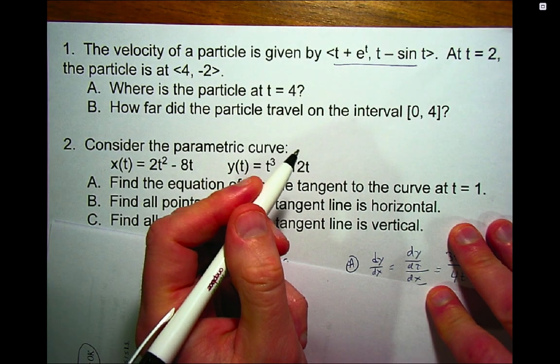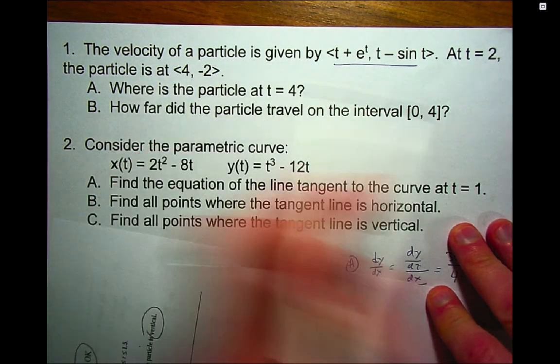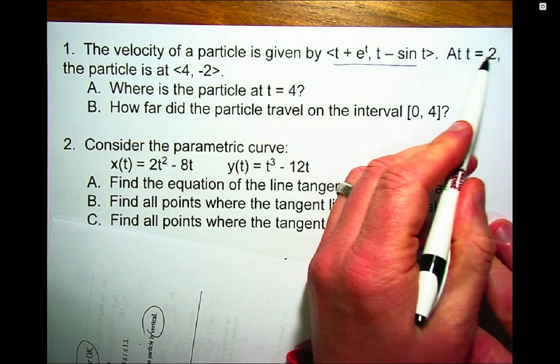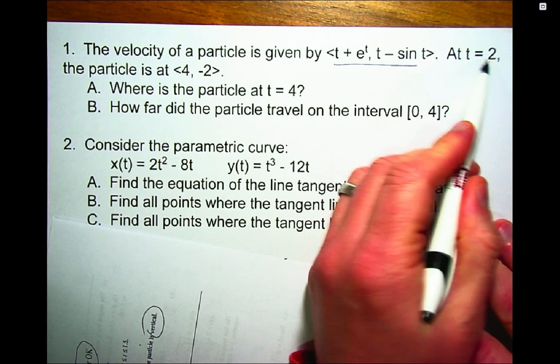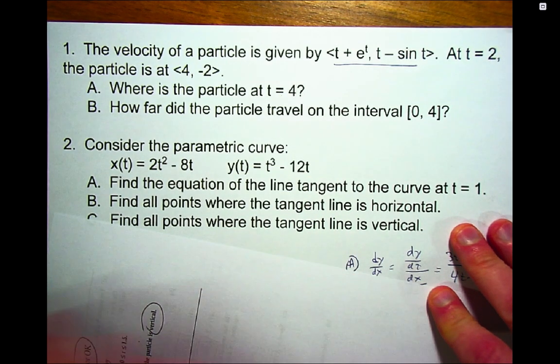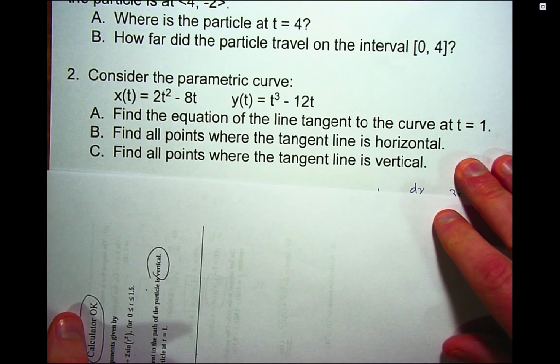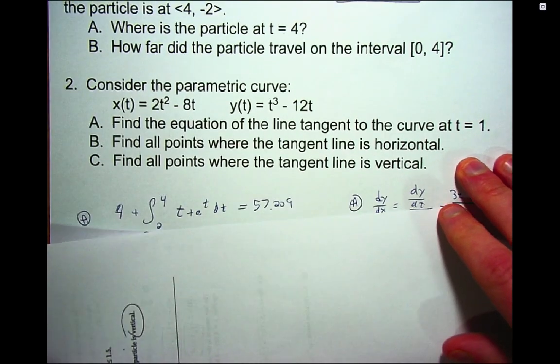This is already the velocity function, and we know a position at a particular time. So where is the particle at time 4? Well, we need to figure out how far it moved from time 2 to time 4. And the tricky part of this, it's sort of like stuff we did a long time ago, except now we've got an x and a y coordinate.